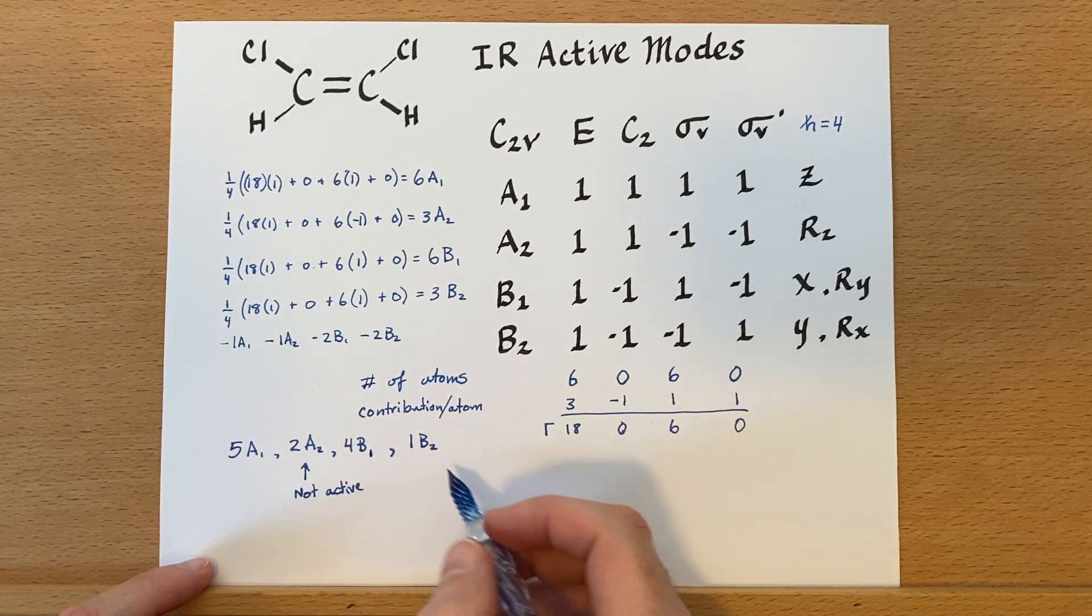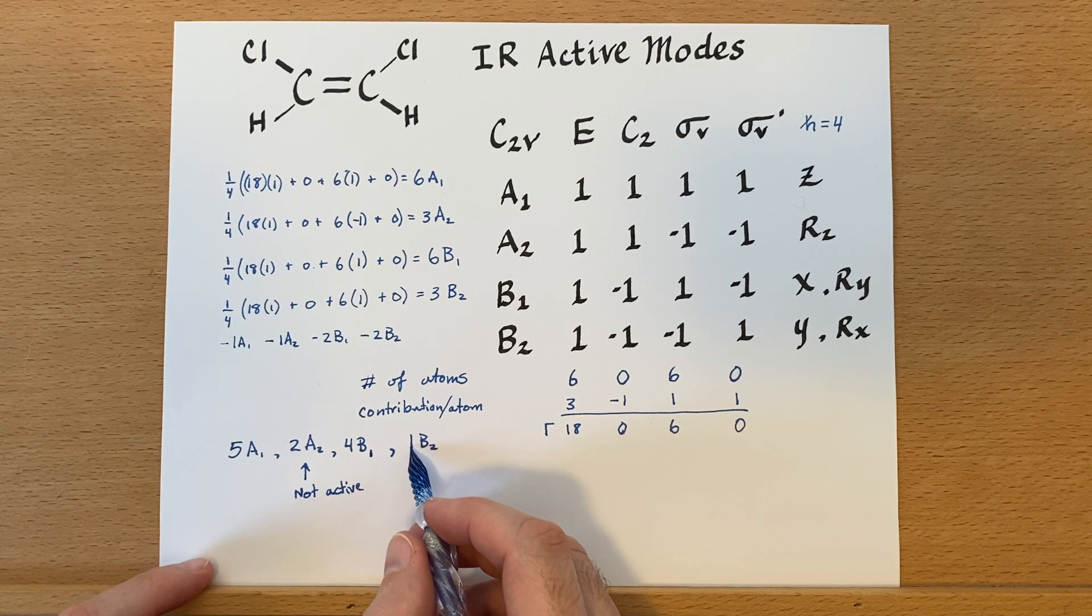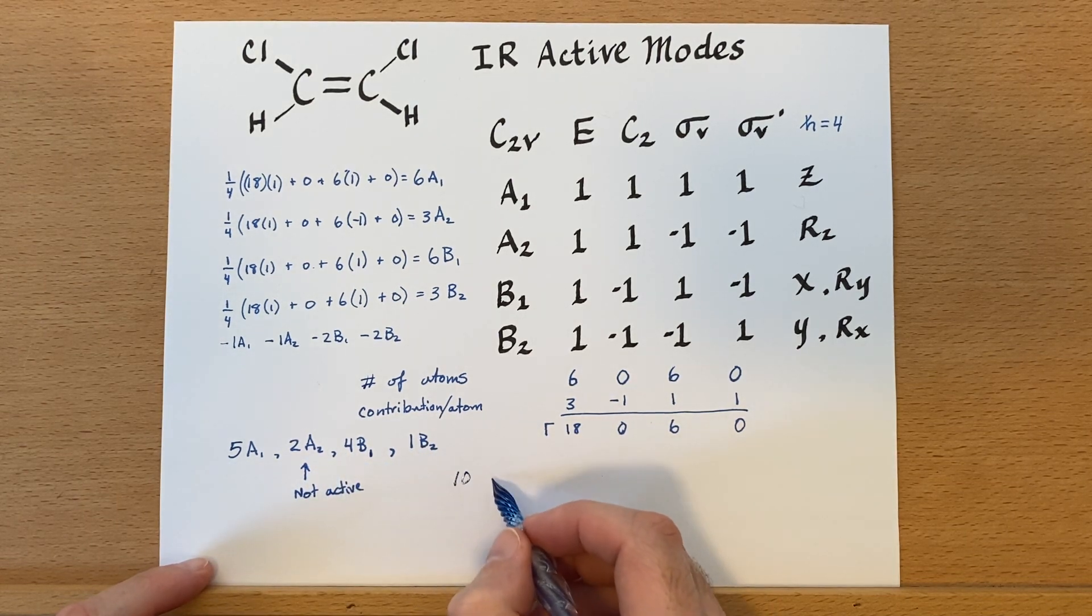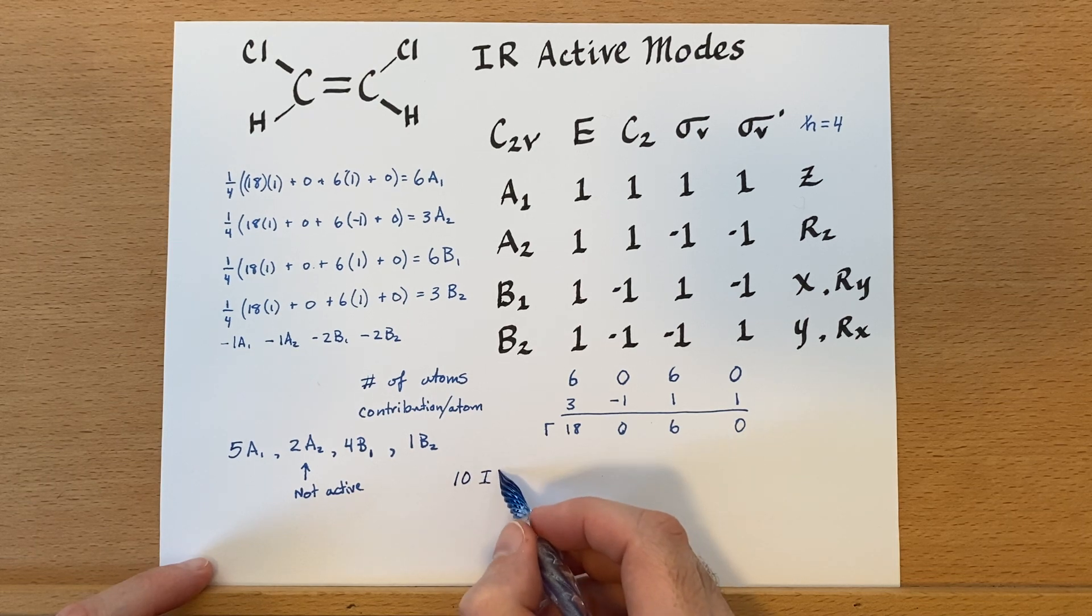So, these are not IR active. So, if we add up these, it's 1 plus 4 plus 5, that's 10 IR active bands.